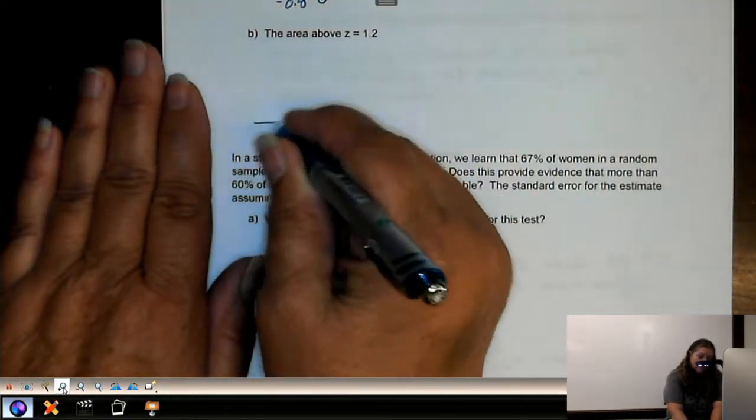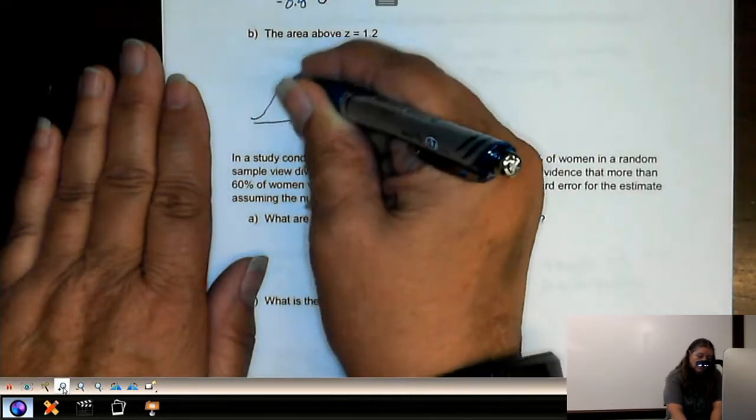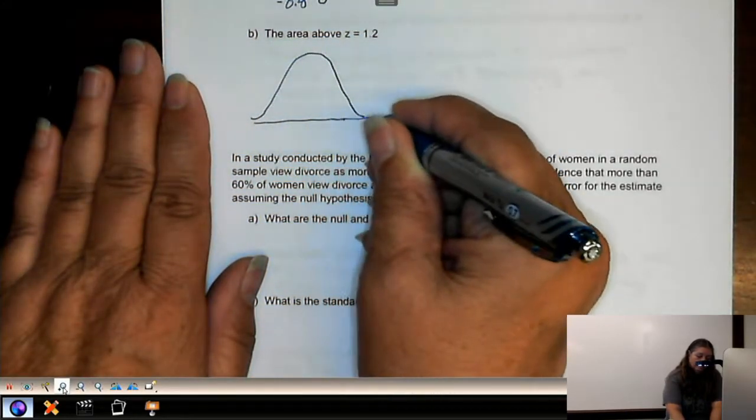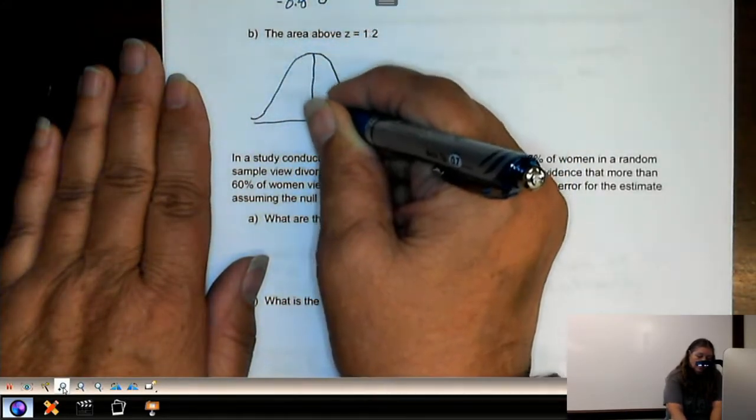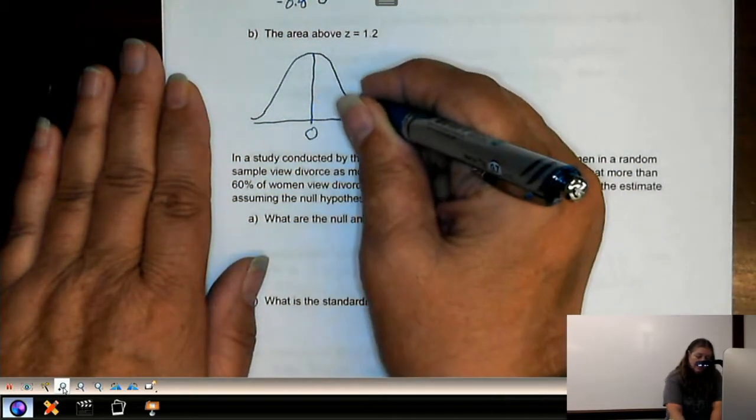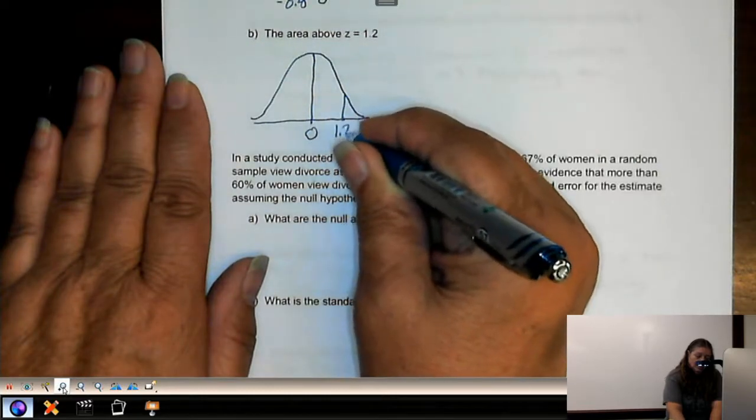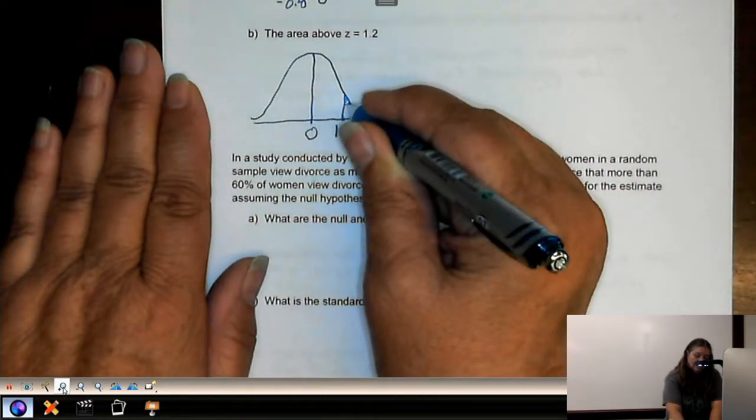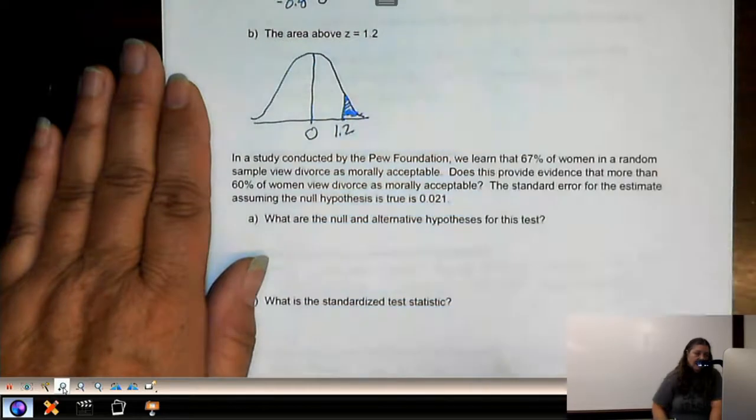Now, we're looking at the area above Z equal to 1.2. Again, our normal distribution, our normal curve, 0 is in the middle, 1.2 is up here someplace. We want everything above it.